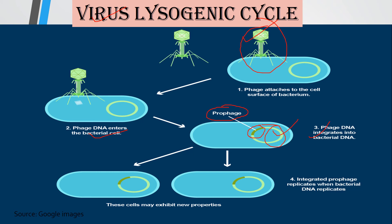In the fourth step, the host genome along with the bacteriophage genome undergoes replication, forming multiple copies of this DNA, and they divide. In addition to this, the bacteriophage DNA can change the properties of the bacterial cells. When the integrated prophage structure comes in contact with certain stimulants, it can follow the lytic life cycle.